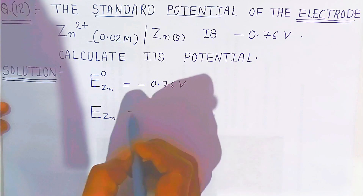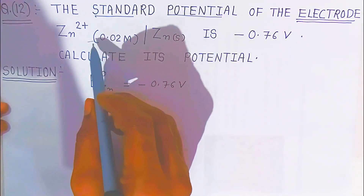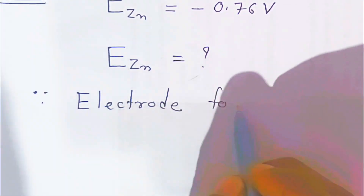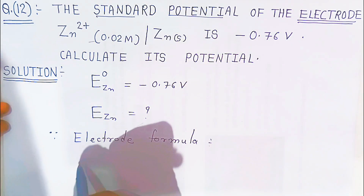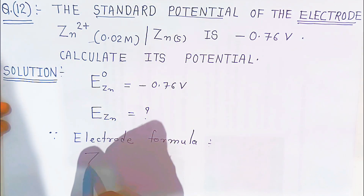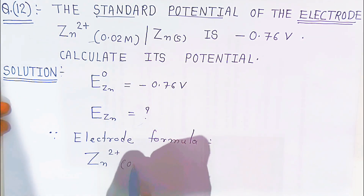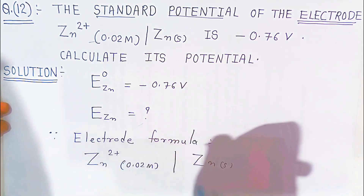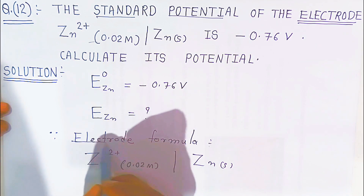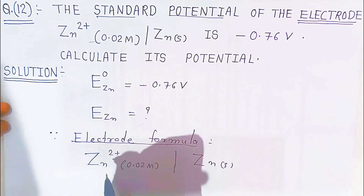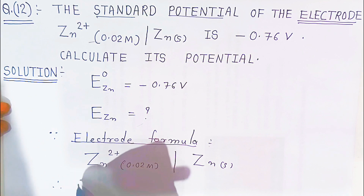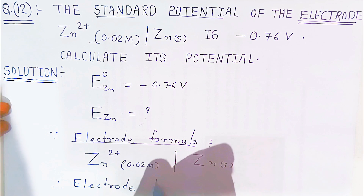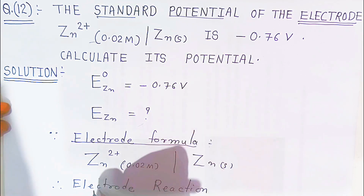The electrode formula is given to us: zinc | zinc 2+ (concentration 0.02 molar) in contact with zinc solid. From this given electrode formula, students, we will write the electrode reaction.